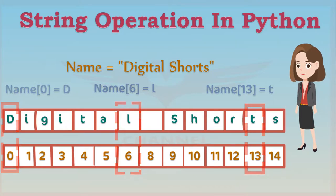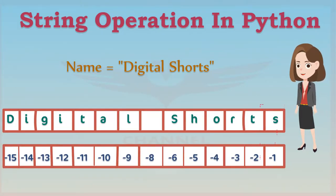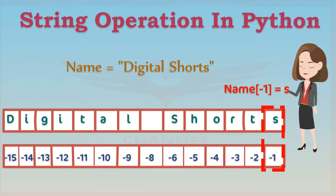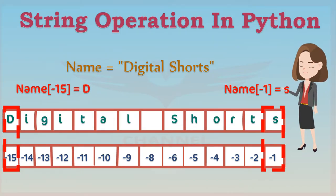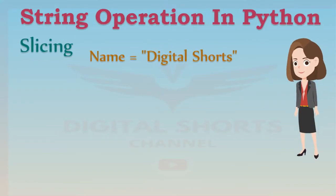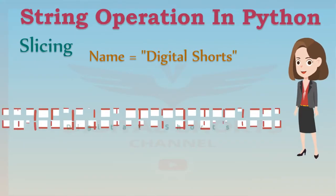We can also use negative indexing with strings. The last element is given by the index negative 1. The first element can be obtained by index negative 15, and so on. We can bind a string to another variable.